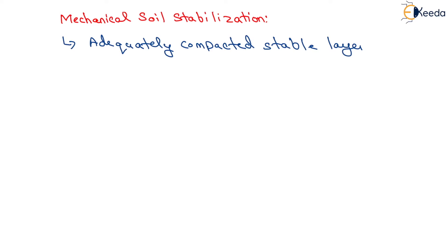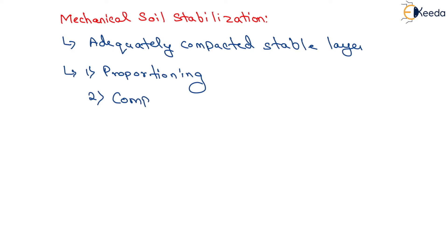Thus the two basic principles in this method of stabilization are: first, proportioning; and second, compaction. If a granular soil containing negligible fines is mixed with a certain proportion of fine or binder soil, it is possible to increase the stability.